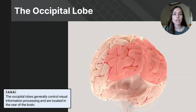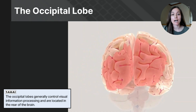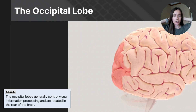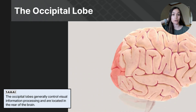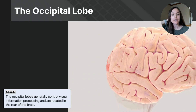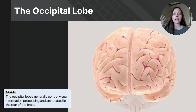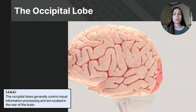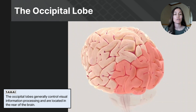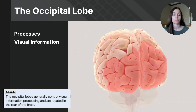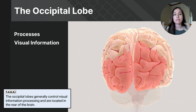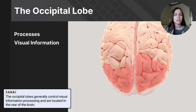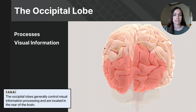The occipital lobe sits at the very back of the cerebrum just above the cerebellum. It is primarily responsible for processing visual information — making sense of visual stimuli so your brain understands and interprets what is seen.